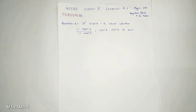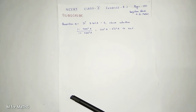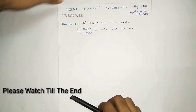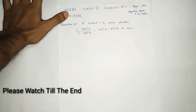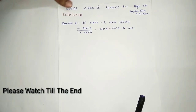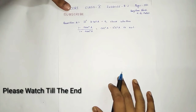What is the question here? If 3 cot a equals to 4, then you have to check whether (1 minus tan squared a) by (1 plus tan squared a) equals to cos squared a minus sin squared a or not.